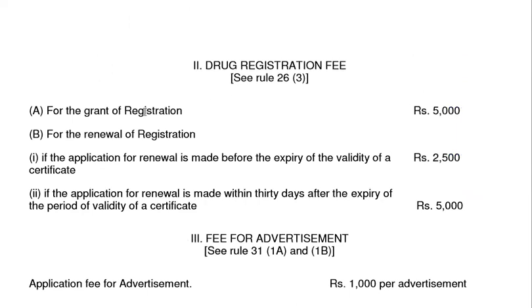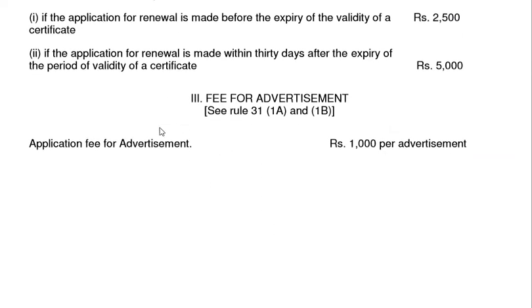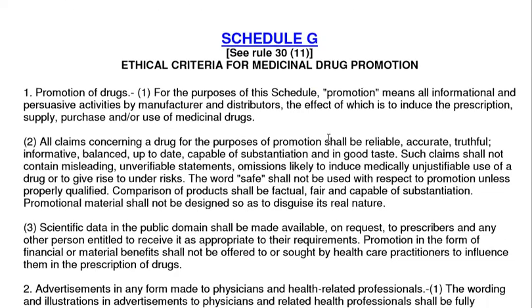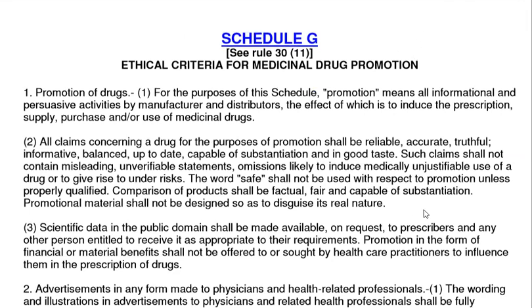Schedule G covers the ethical criteria for the promotion of drugs. This schedule outlines rules for medical promotion. Promotion means all informational and persuasive activities by the manufacturer and distributor, which influence prescription, supply, and purchase of medicinal drugs. All claims concerning the drug for the purpose of promotion shall be reliable, accurate, truthful, balanced, up-to-date, and in good taste.